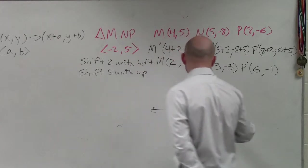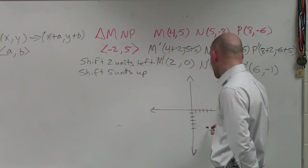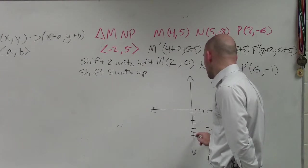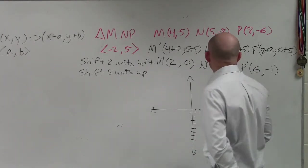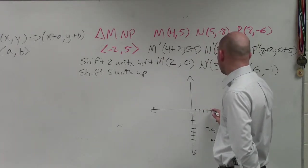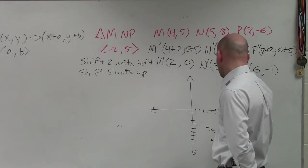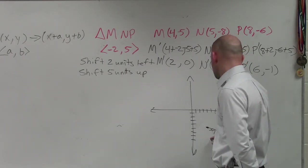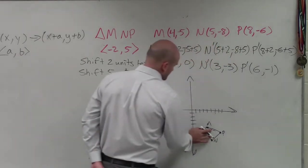Then we have N, which is 5, negative 8. So 1, 2, 5, 1, 2, 3, 4, 5, 6, 7, 8. And then we have P, which is 8, 1, 2, 3, 4, 5, 6, 7, 8, negative 6.